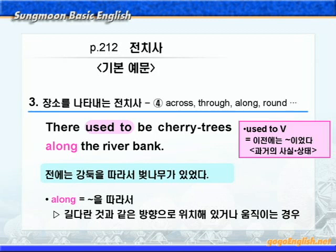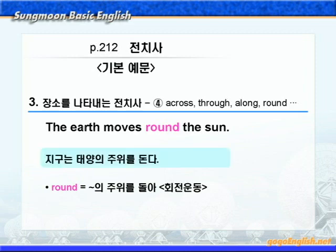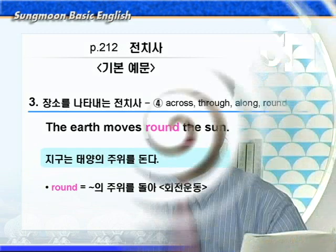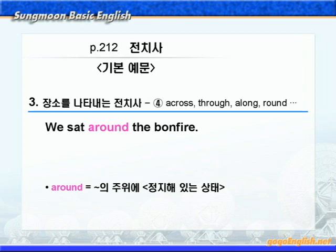다음으로 전치사 round를 보죠. round는 '뭐뭐의 주위를 돌아'라는 뜻으로 회전운동을 나타내니까, '지구는 태양의 주위를 돈다'가 됩니다. round하고 자주 혼동되는 around에 대해서 살펴보겠습니다. 'We sat around the bonfire.' around는 '뭐뭐의 주위에'라는 뜻으로 정지해 있는 상태를 나타내 주는 전치사죠. bonfire는 '모닥불'이라는 뜻이니까, '우리는 모닥불 주위에 앉았다'가 됩니다.